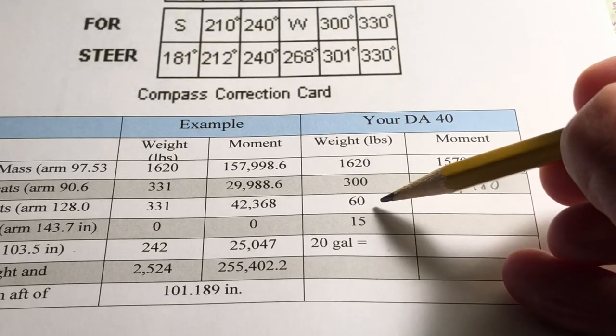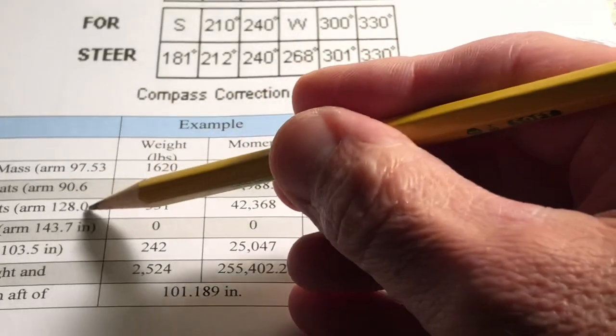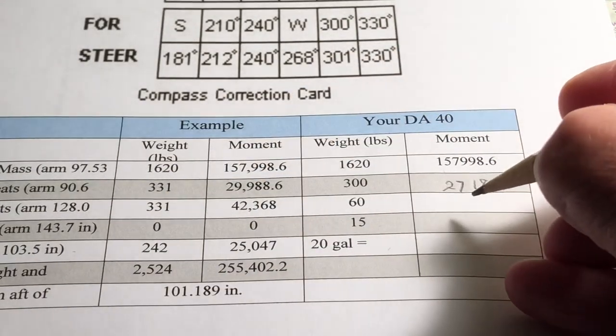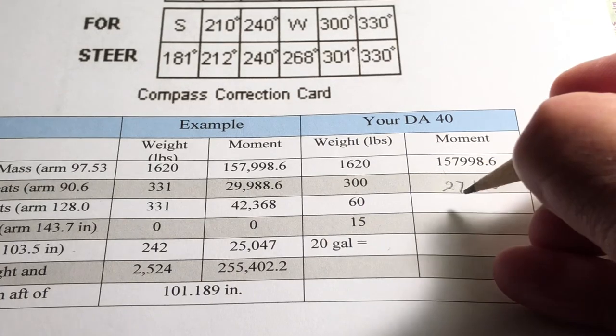We have 60 pounds in the rear seats, 128 inches of arm, so 60 times 128 is 7,680.